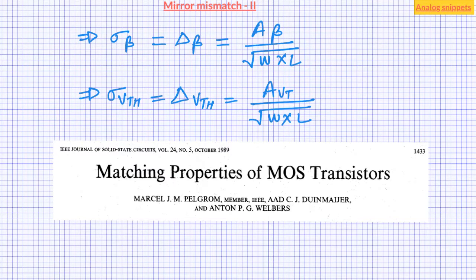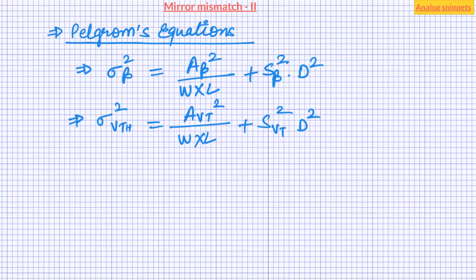Apart from area proportionality constants A_beta and A_VT, the variance equation in this paper contains another parameter which describes the variations with spacing. If we write the variance equation again with this spacing parameter, notice that this is the equation for the variance and not the standard deviation. The first term is the familiar term A squared over area, and here we have a second term which contains the spacing parameter.